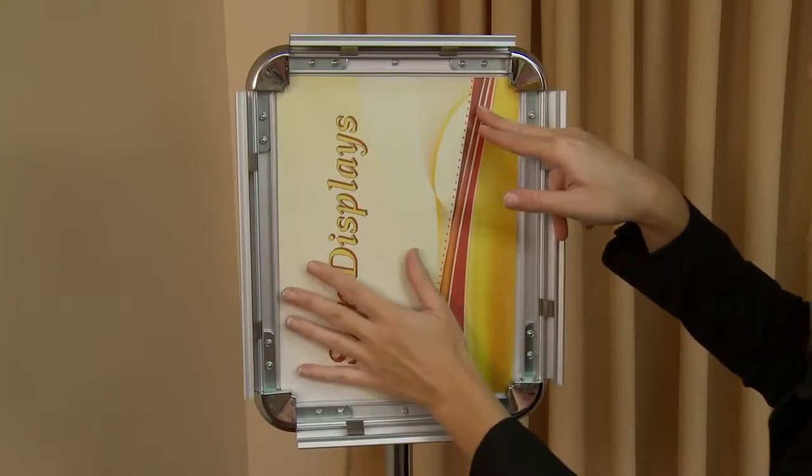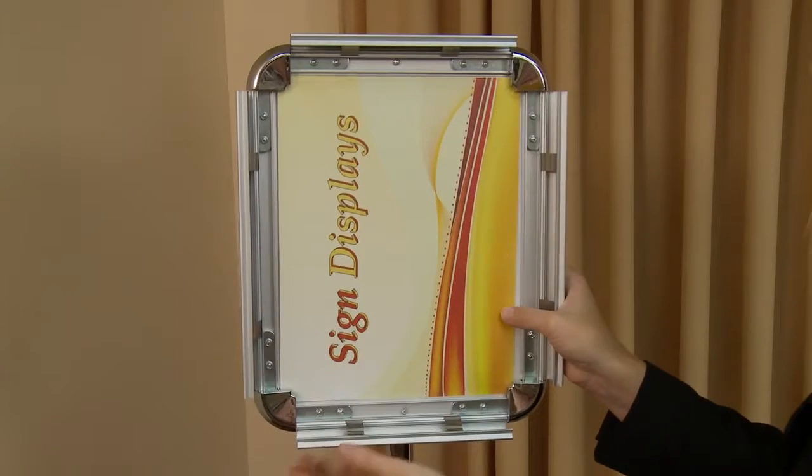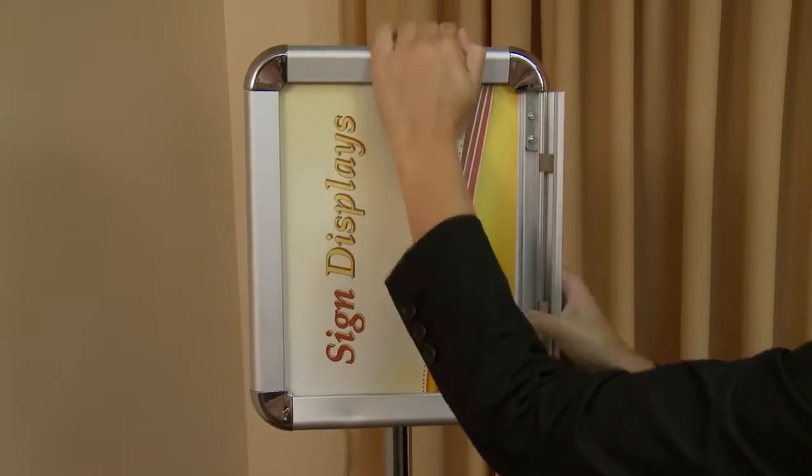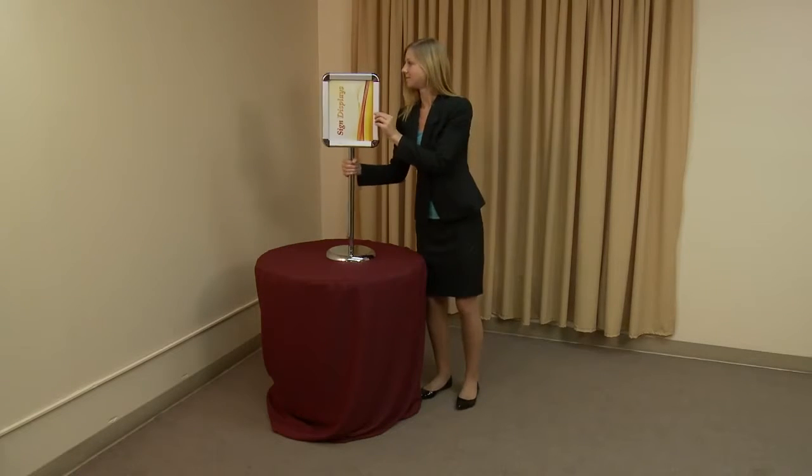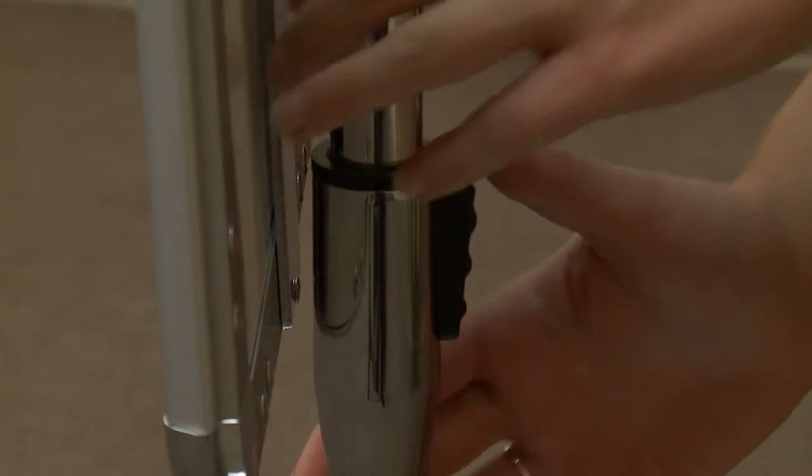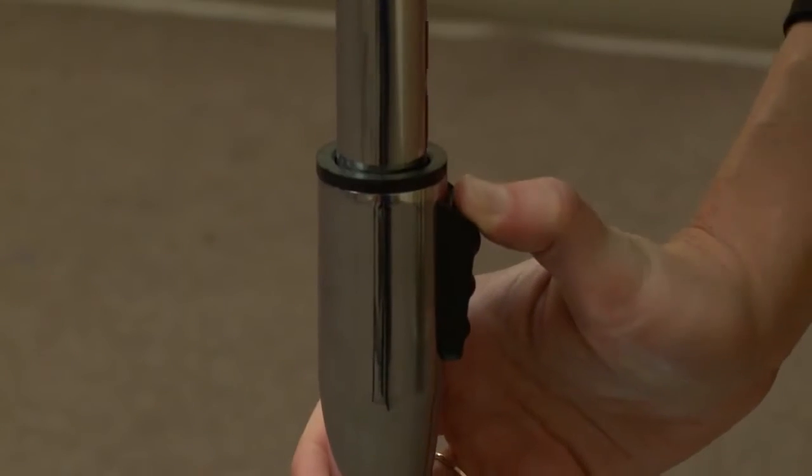To secure, close the four snap edges. To display your graphic, place your pedestal snap frame on the floor and push the black button of the pole downward to extend the telescoping pole to your desired height.